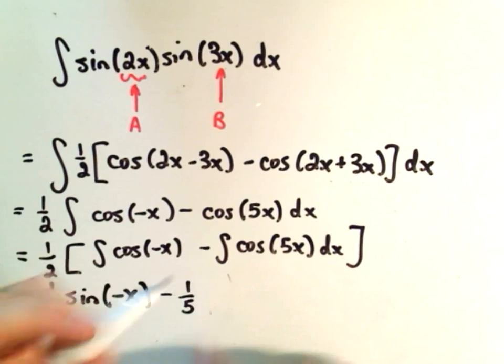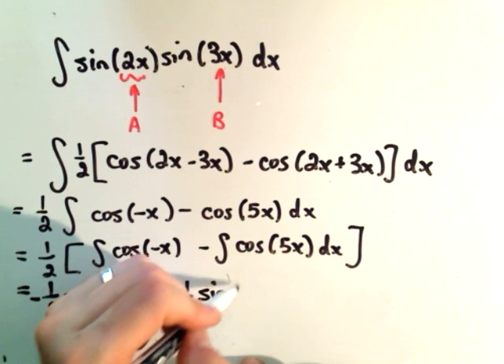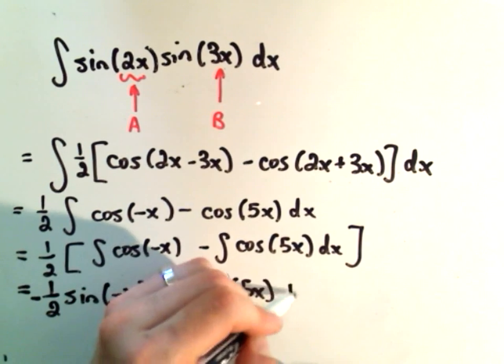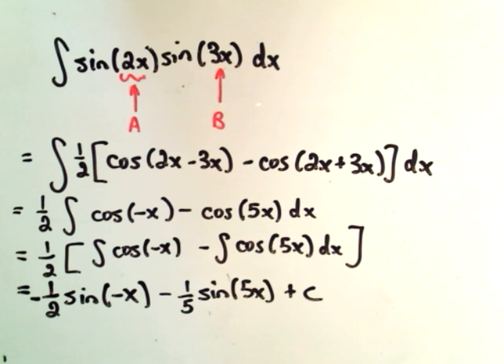one-fifth sine of 5x, plus c is your antiderivative for that one. So you can do basically the exact same u-substitution that you did in the last one.